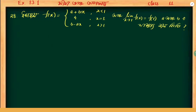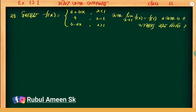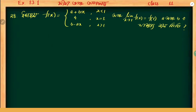NCERT Mathematics Class 11, Exercise 13.1, Question 28. f(x) is defined as: ax + bx if x is less than 1, f(1) = 1 if x is equal to 1, and b minus ax if x is greater than 1. Given that limit x tends to 1 of f(x) is equal to f(1).